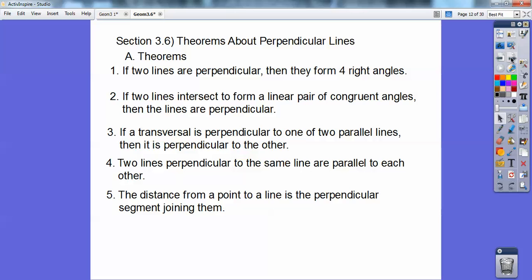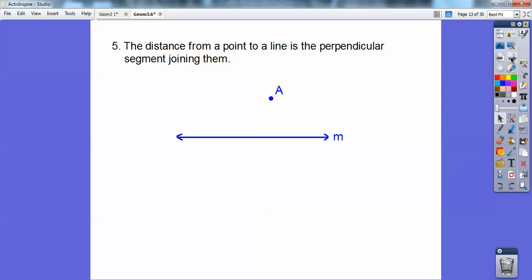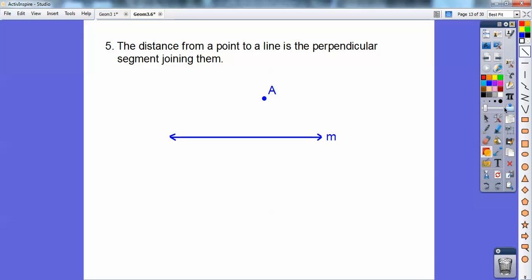The distance from a point to a line is the perpendicular segment that joins them. So here it is right here. There's a point right there and a line. This wouldn't be the distance. This would not be the distance. This guy going right through here, that wouldn't be the distance.